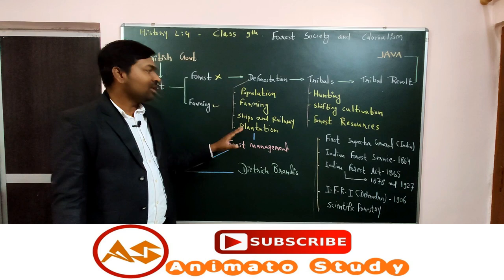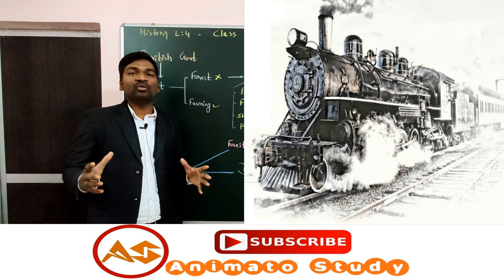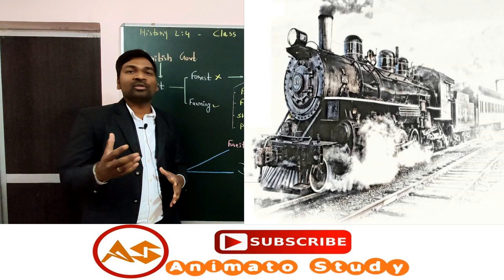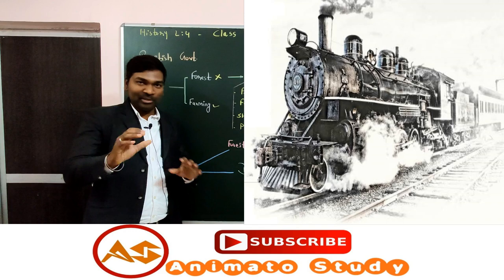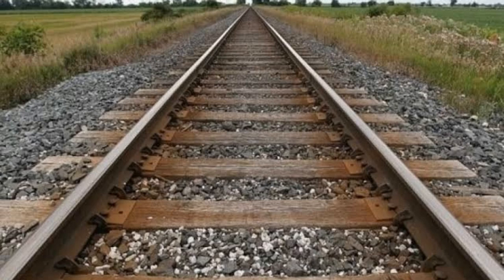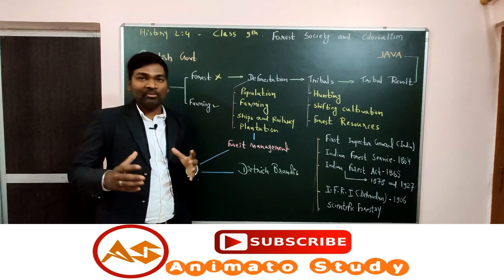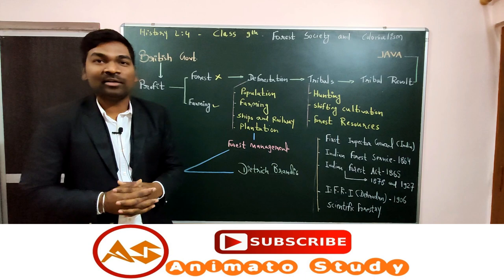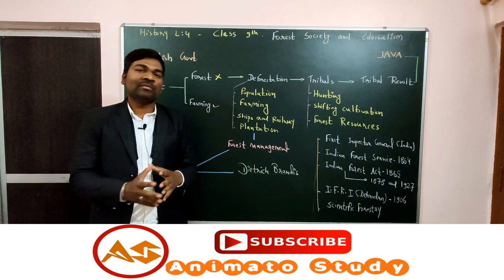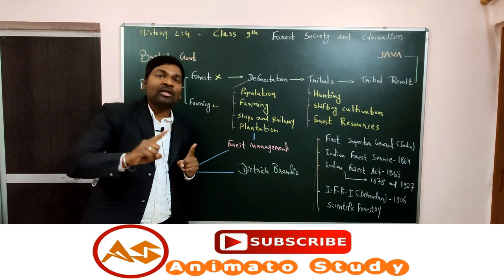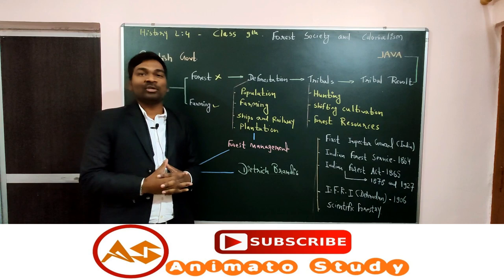After the 1850s, railway expansion took place on a large scale, used for transporting goods, passengers, and the British army. For laying railway tracks, sleepers were required — not sleeping berths, but wooden planks. From one average-sized tree, around four sleepers were obtained. For making one mile of railway track, about 1,750 to 2,000 sleepers were required. So for one mile of track, around 500 trees were cut — massive deforestation was happening and increasing over time.